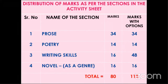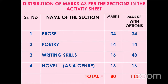The basic theme you should understand is that prose in the overall question paper is asked for 34 marks, poetry for 14, writing skills 16 marks, and 48 marks with options. There is only one place where you have options — that is writing skills and novel as a genre, for 16 marks related to the literature aspect. So the paper of 80 can be said to be a paper of 112 marks with options. Everybody should know that you will be assessed in these four areas accordingly.